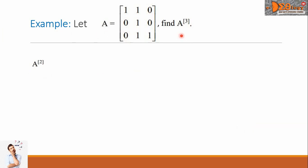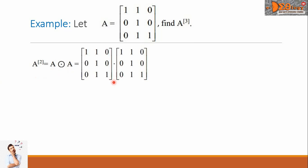Our solution begins with the computation of A power 2, which is the boolean product of A and A. We put the two matrices side by side. Since matrix A is 3 by 3, we expect our final answer to be 3 by 3 also, and the general form is here. Let's begin now with finding the first element, A sub 1,1.